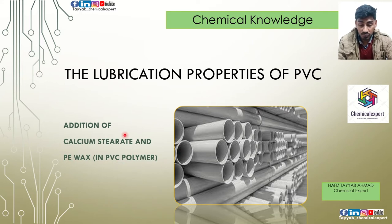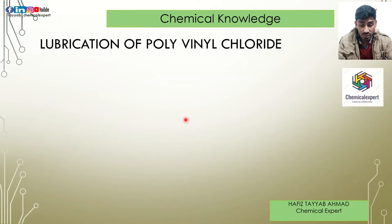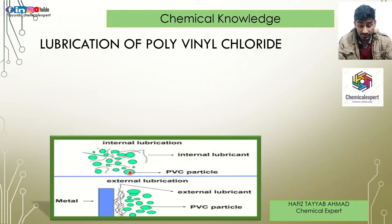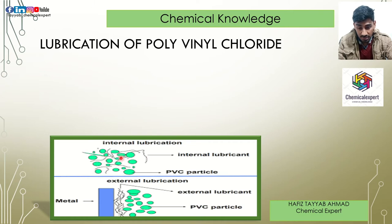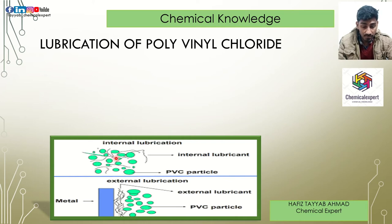First we will learn about internal and external lubrication. You can see here — the green circular shapes are the PVC molecules, or polymers. The lines represent internal lubrication between monomers. One layer of polyvinyl chloride slides against another, which requires internal lubrication.